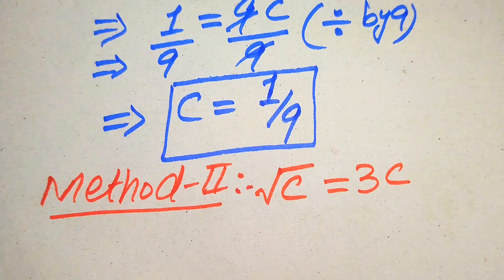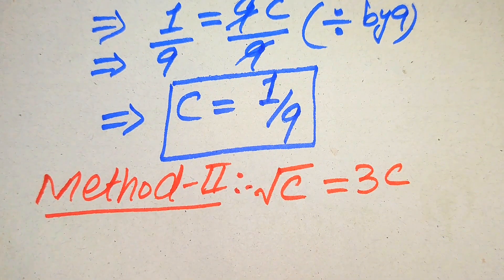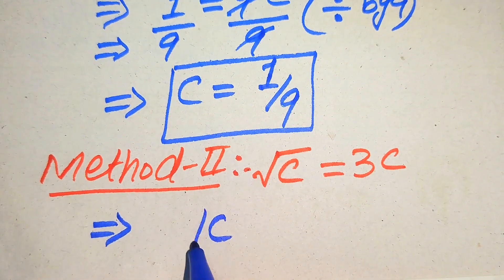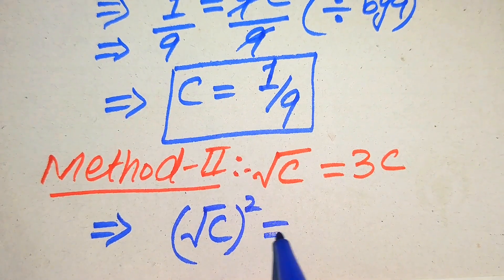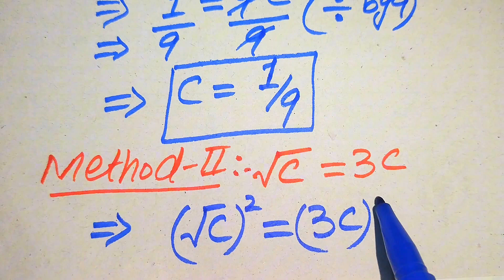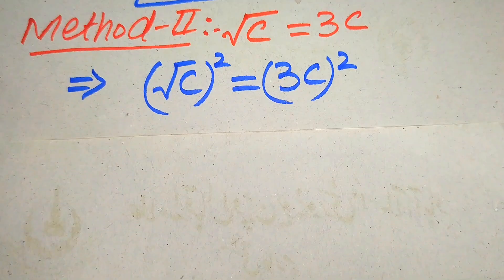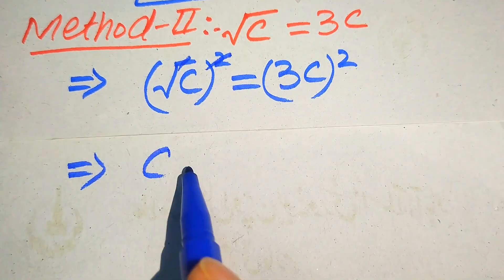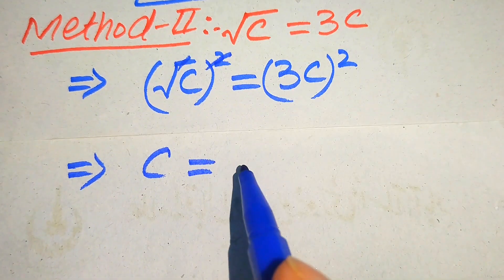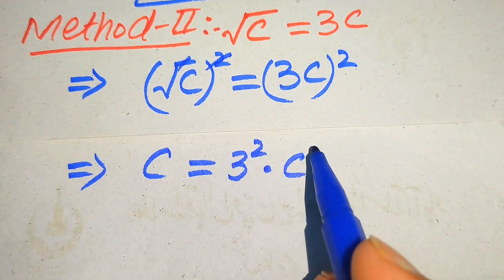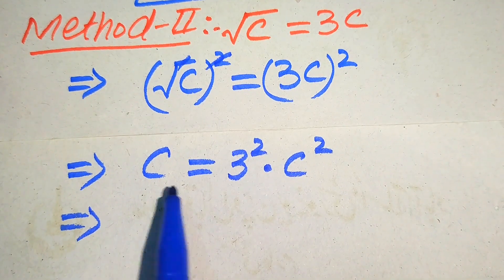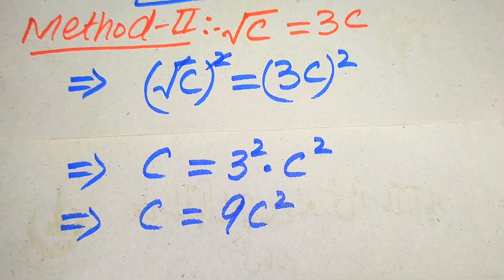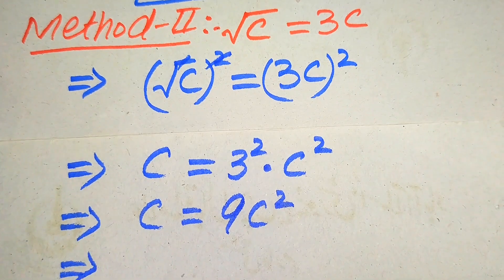In the second method, I'll give you a smarter way to easily get the value of c. We directly square both sides. When we square both sides, square root of c whole squared equals 3c whole squared. The square and the square root cancel on the left, giving us c. On the right, we apply the square separately to both values: 3 squared times c squared.